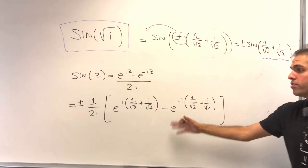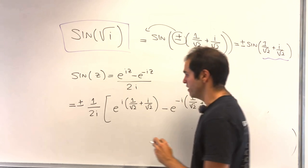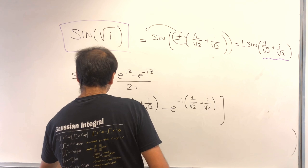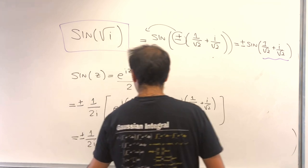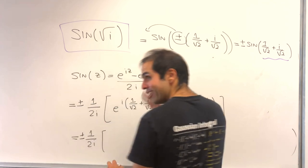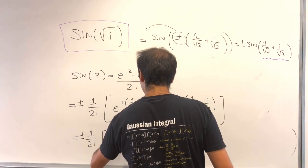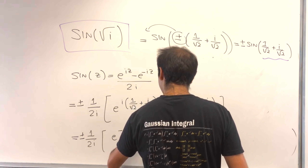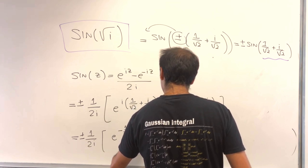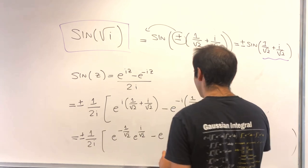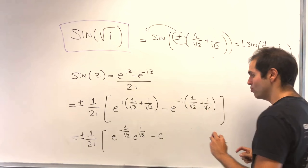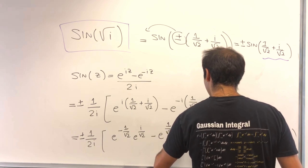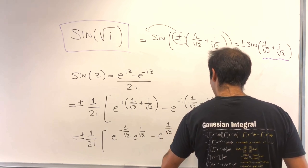The trick is simply to separate out the real and imaginary parts. So this becomes ±(1/2i) times: i times i gives e^(−1/√2) times e^(i/√2), and then minus e^(−i times i), which is e^(1/√2), times e^(−i/√2).